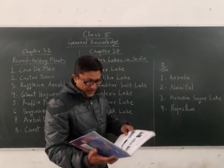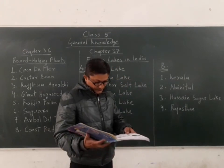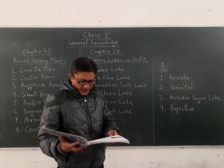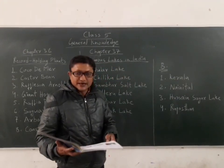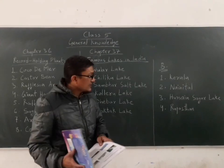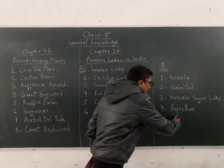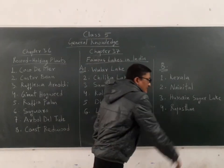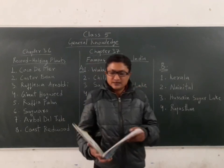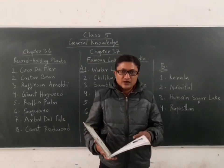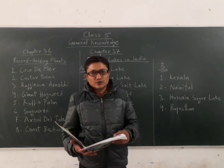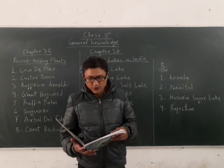Fourth and last question: in which Indian state is Kushkar Lake located? The answer is Rajasthan. These two chapters are now completed. Do it very carefully in your book.